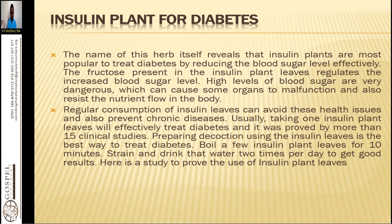High sugar levels cause loss of memory. If you have high sugar in your system, you need to exercise regularly and drink a lot of water. Regular consumption of insulin plant leaves can avoid these health issues and also prevent chronic diseases. Taking one insulin plant leaf daily will effectively treat diabetes, as proven by more than 15 clinical studies. Preparing a decoction using the insulin leaves is the best way — boil a few insulin plant leaves for 10 minutes, strain, and drink that water two times per day.